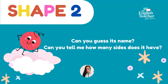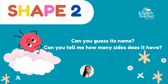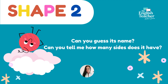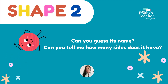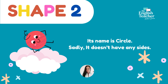Can you guess his name? Can you tell me how many sides does he have? Take your time. Let's find out now. His name is Circle. Sadly, it doesn't have any sides.